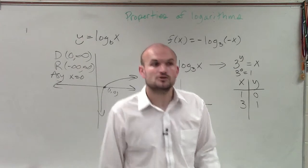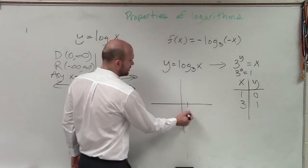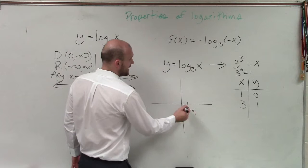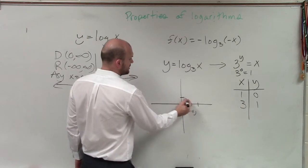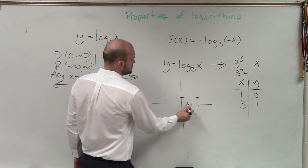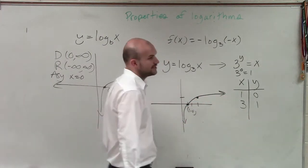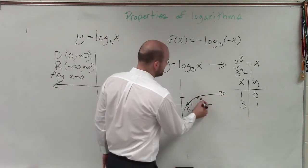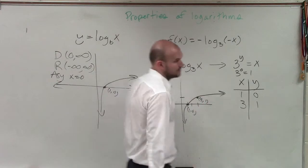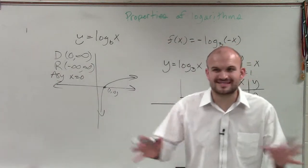So those are two points I have. I have 1 comma 0 and 3 comma 1. So remember I told you to plot points on your graph. Now you have two points. Does that make sense? That's what I was expecting.